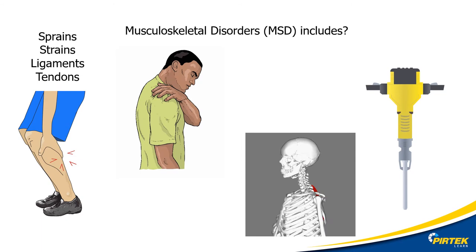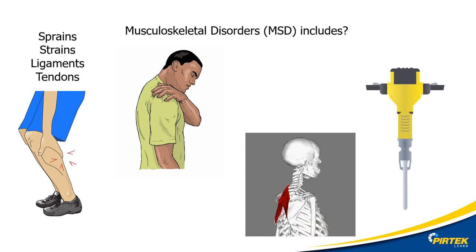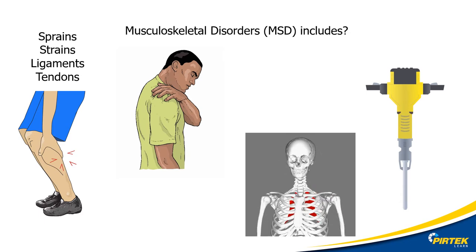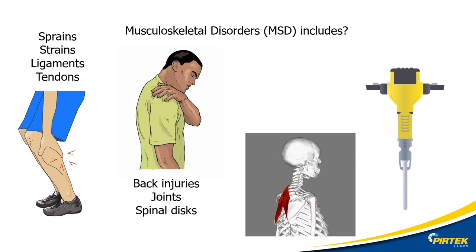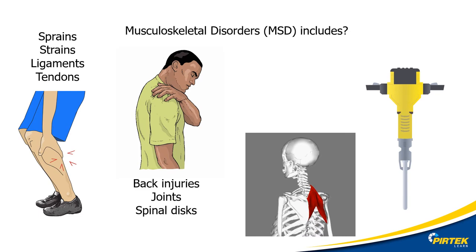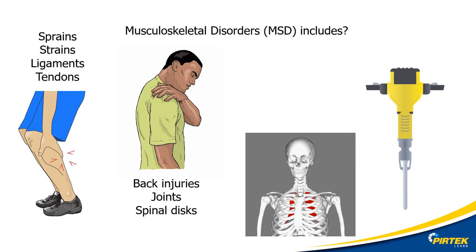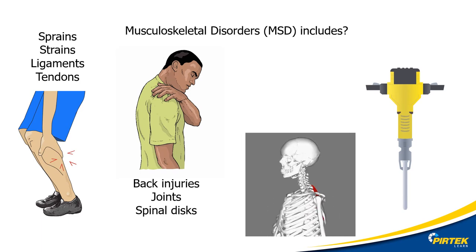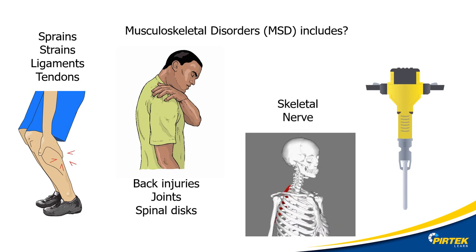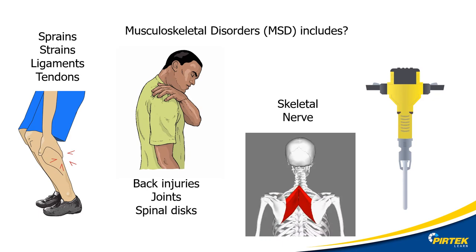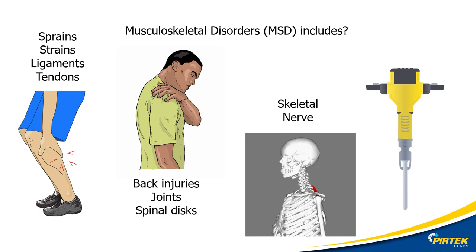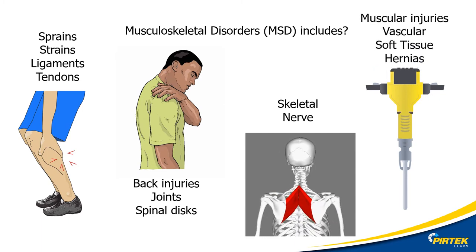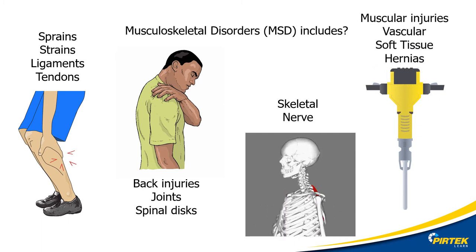What are some of the musculoskeletal disorders? Sprains and strains of muscles, ligaments and tendons. Back injuries. Spinal discs. Muscles in the back. Skeletal, bone-related injuries. Muscular and vascular disorders caused by vibration.